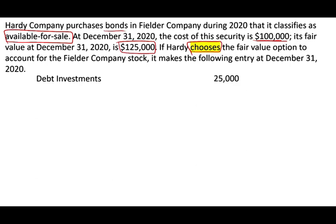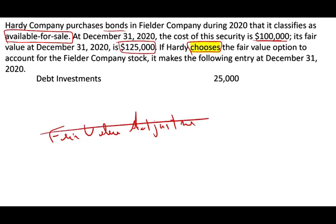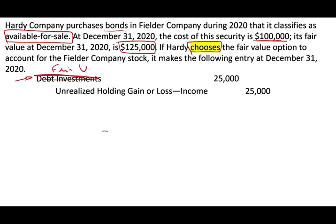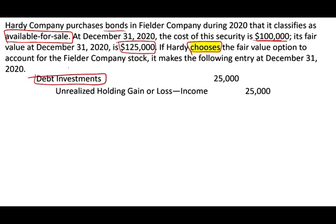This is different from the available-for-sale Fair Value treatment. Under available-for-sale treatment, the debit would have been to a Fair Value Adjustment account. Under the Fair Value Option, we are not using the Fair Value Adjustment account — instead we go to the instrument itself, the debt investments account, and increase it by $25,000. We would still report the gain in income as an unrealized holding gain or loss. So we are touching the instrument directly rather than adjusting the whole portfolio, because we selected that specific instrument — that specific bond in Fiddler Company.